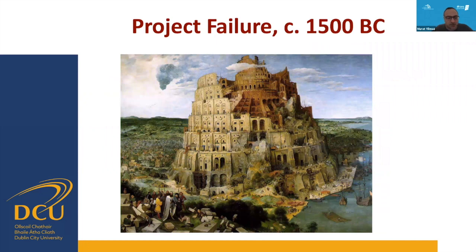When we think about the first project failure, we can look at the Babylonian tower. Mythologically, these people were willing to build a huge tower reaching the skies, but unfortunately it wouldn't work that way. According to this mythology, they were punished by their creator, and that's one reason languages were differentiated among humans. There have been several project failures throughout human history — even mythologies contain clues about this.